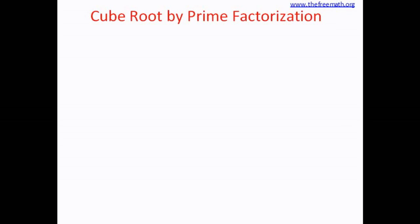Let's see how to calculate cube root using the method of prime factorization. We will learn with the help of an example. So let's consider the cube root of 216. We will first do the prime factorization of 216.